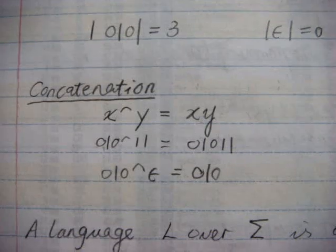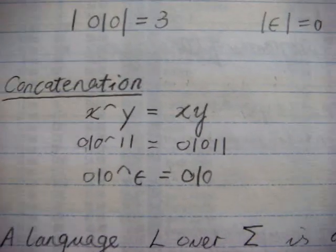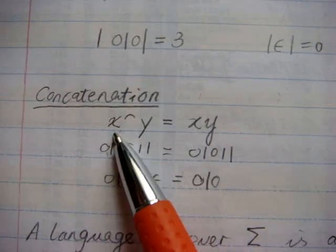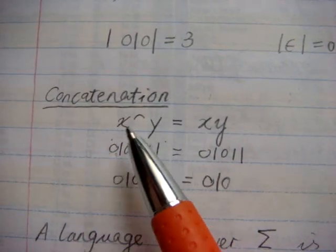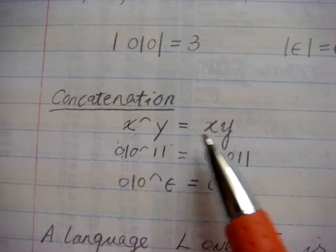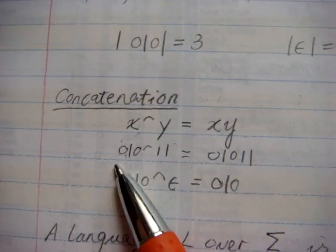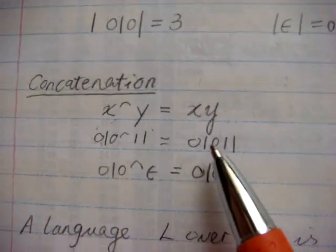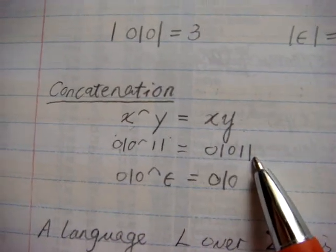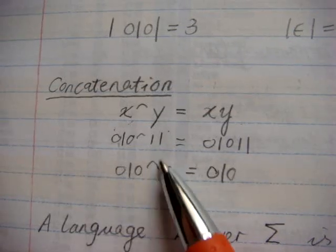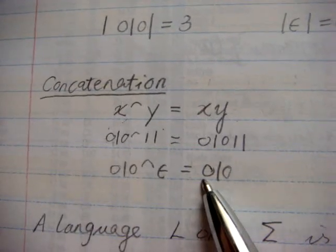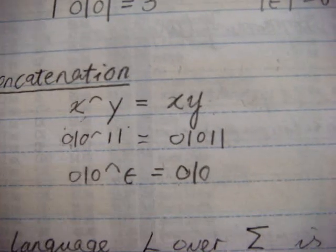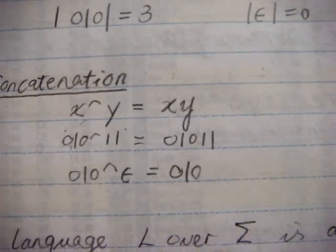Since we are talking about strings, there is another operation we can use: concatenation. If x and y are strings, x concatenated with y can be written as xy. For example, '010' concatenated with '11' gives '01011'. And '010' concatenated with the empty string is just '010' — no matter what string is concatenated with the empty string, the result is the string itself.